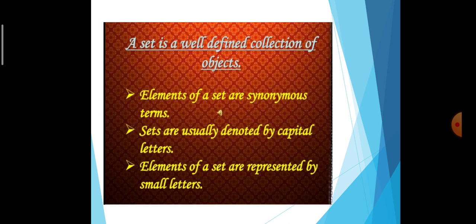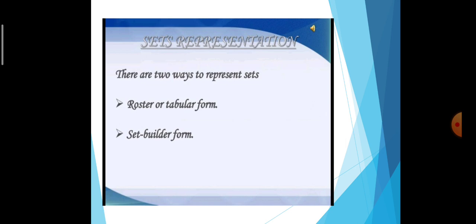So, a set is a well-defined object. A set is a well-defined collection of objects. Elements of a set are also called members — these are synonymous terms. Sets are usually denoted by capital letters. Elements of sets are represented by small letters. Now, representation of sets: there are two ways to represent sets — roster or tabular form, and set builder form.